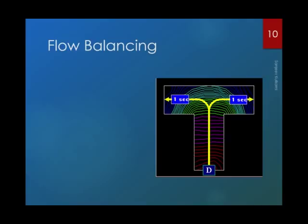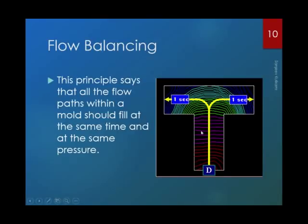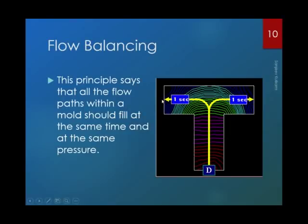The second principle is flow balancing. Here you can see a component shape with different gate location choices. Location D is the correct location as per this principle. The principle says that all flow paths within a mold should fill at the same time and at the same pressure. If you provide the gate at location D, one flow path takes about 1 second, and this flow path also takes 1 second — both flow fronts fill the cavity at the same time and pressure, giving the best result.